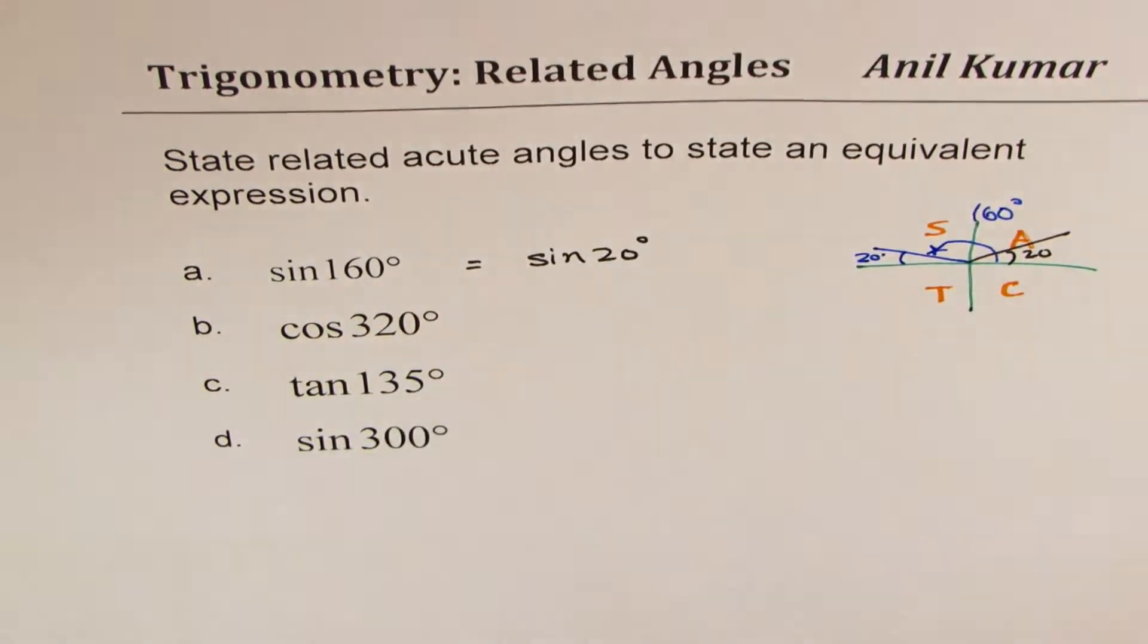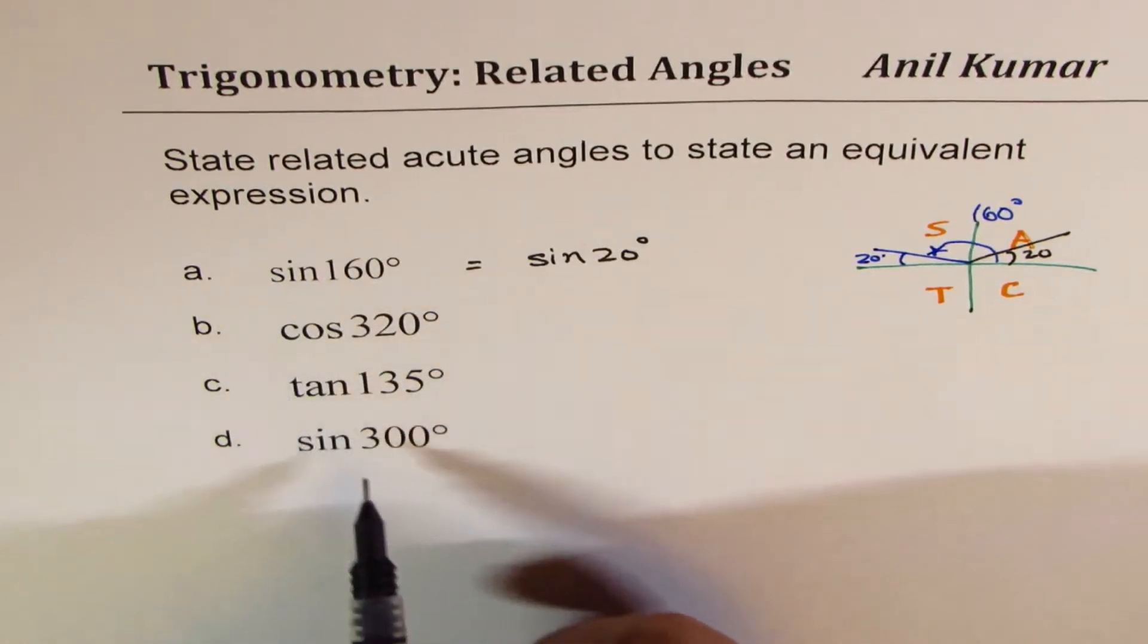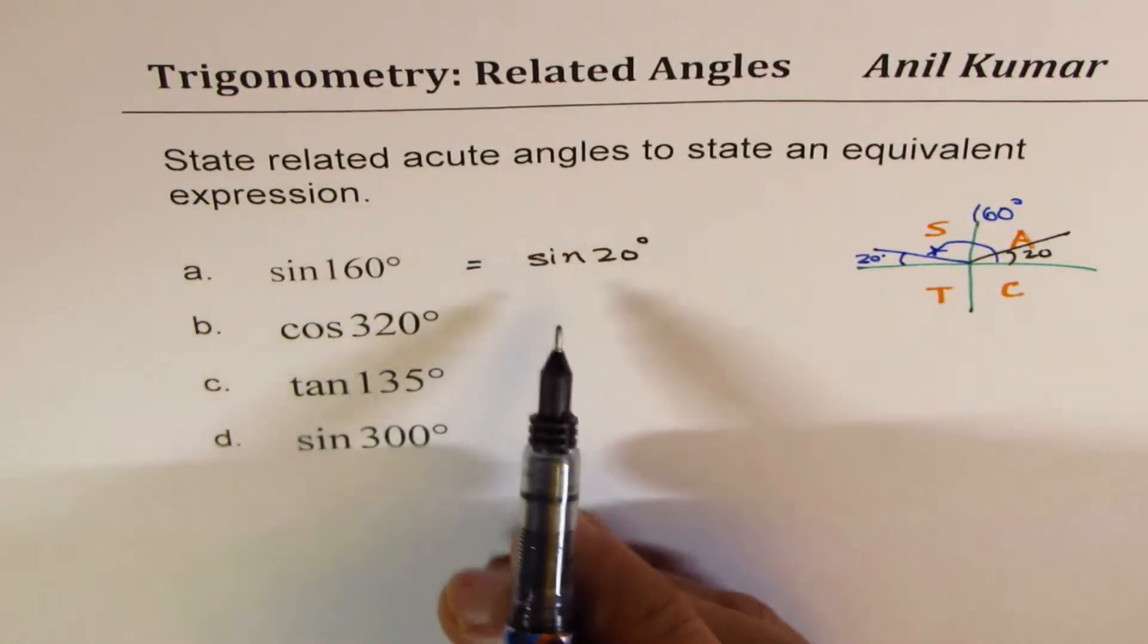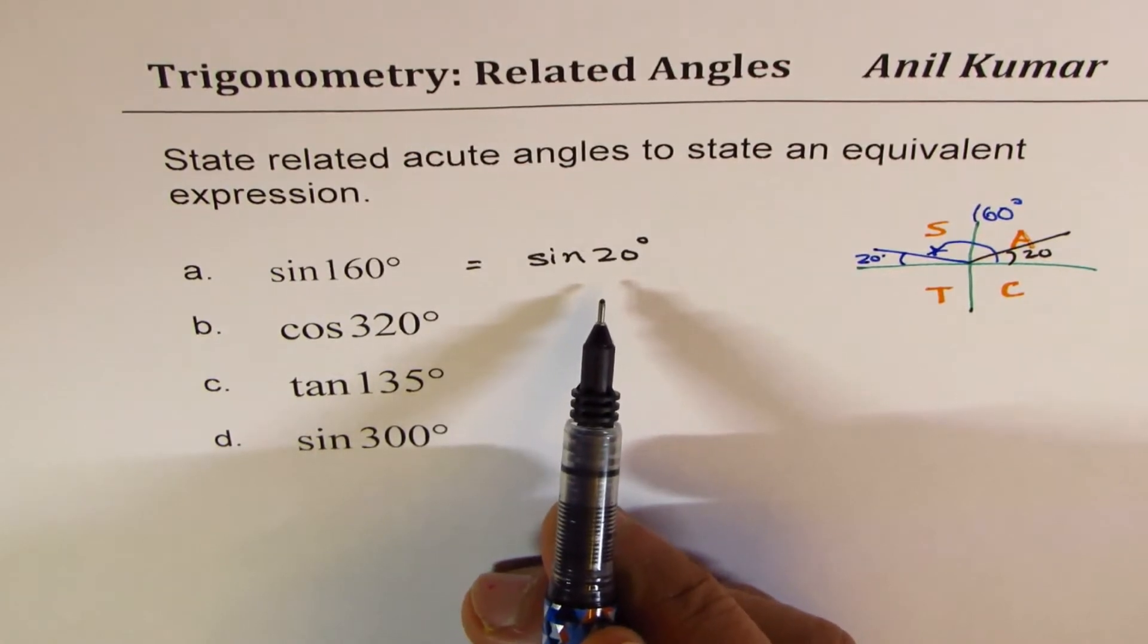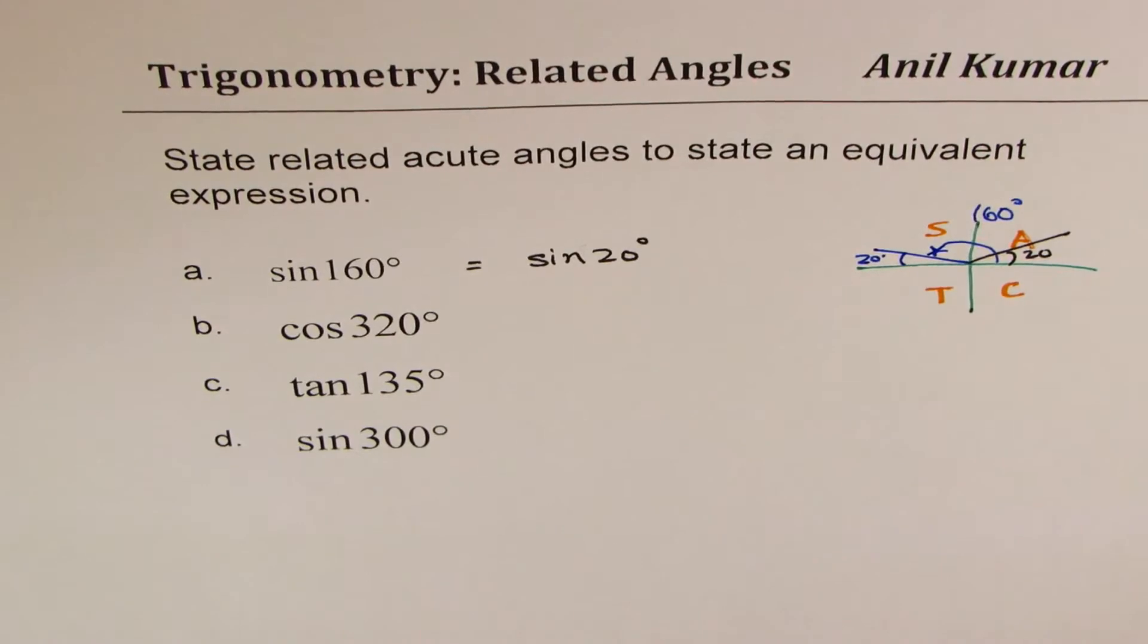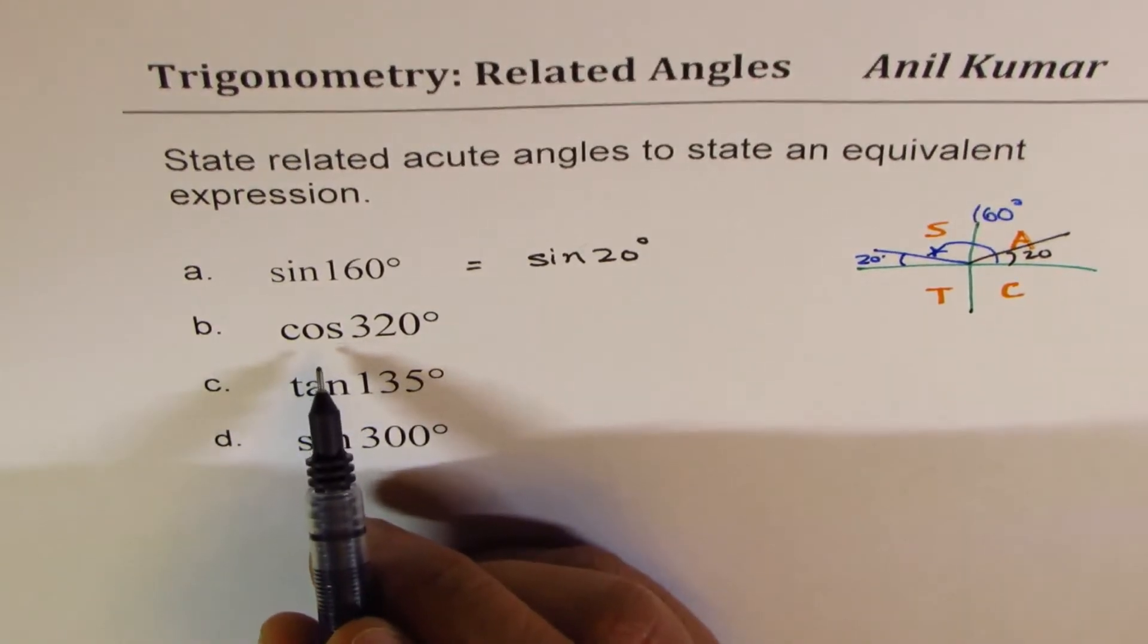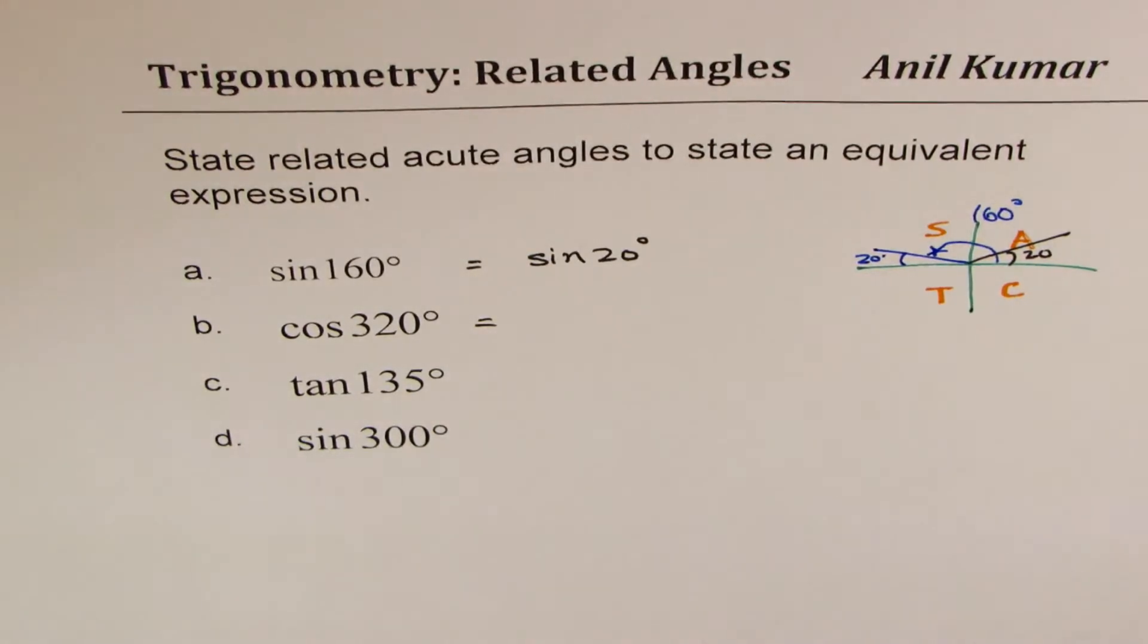Both will give us the same value. That is how you have to state each of these expressions in terms of its related acute angle. So I hope the concept is clear. You can pause the video and answer the other three. So let's look into the next one which is cos of 320 degrees.